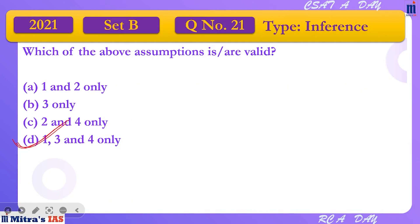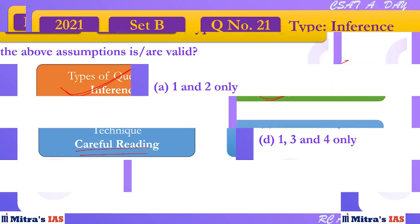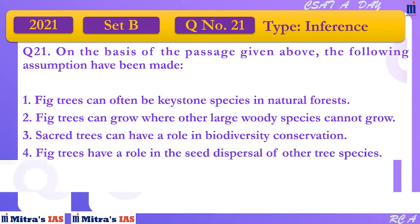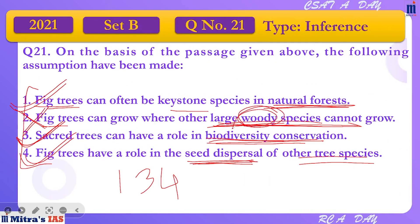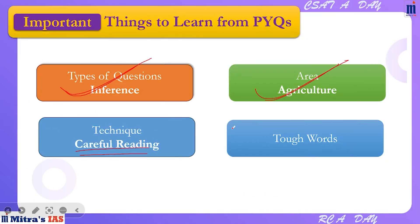The answer as per us is D, which is one, three, and four. This was an inference kind of question — you had to read and understand the passage and come up with an inference. Agriculture area se question tha, aapko careful reading ki zaroorat thi. Choti choti cheezein dekhi jaisi ki for example, the word 'woody species' aur passage mein likha tha 'large trees' — little things you had to be careful about before selecting your option.